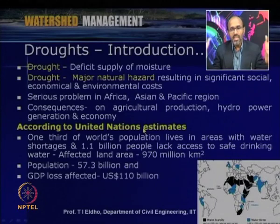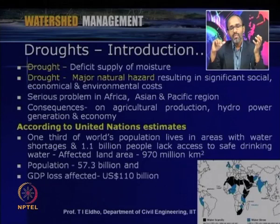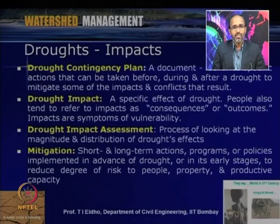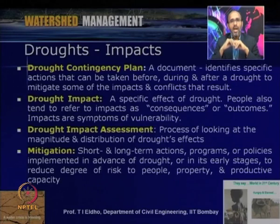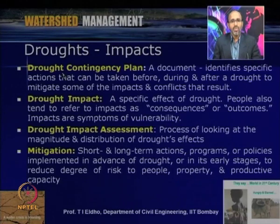Drought is a major disaster. Many developed countries like the United States and European countries have taken many measures to combat droughts, and developing countries like India, China, and many African countries are also looking at various interventions to deal with short-term or long-term droughts. It is always better to critically analyze drought impacts by preparing contingency plans — analyzing causes and implementing measures to reduce drought impacts. It is always better to prepare a drought contingency plan.